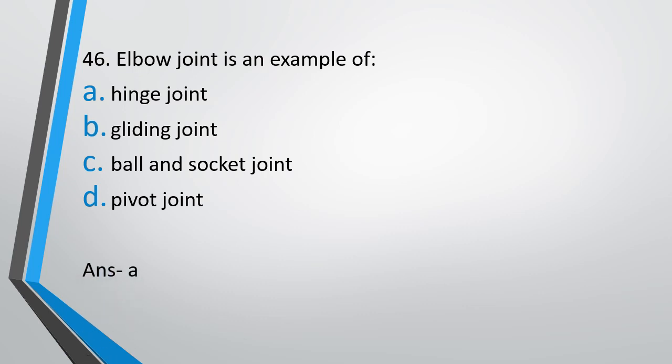Remember what a hinge joint looks like — it looks like a door. When you open and close a door, that's the type of movement the hinge joint allows. Similarly, the elbow allows only flexion and extension, which is the same movement seen in door hinges. So it's called a hinge joint.